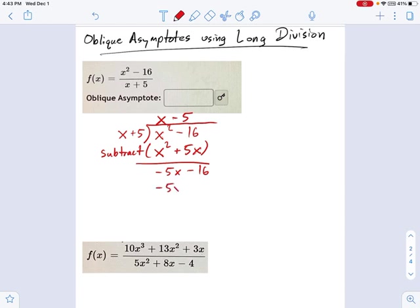We multiply everything back down. We get negative 5x minus 25. And we would subtract this part to find our remainder. But it's not necessary. This is just for curiosity's sake. It looks like we would get positive 9.